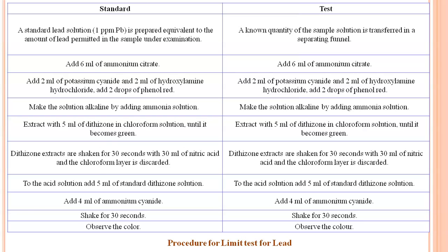For the preparation of the standard solution, a standard lead solution is prepared equivalent to the amount of lead permitted in the sample under examination — for example, a solution having 1 ppm lead. The same procedure is followed: addition of 6 ml ammonium citrate, 2 ml potassium cyanide, 2 ml hydroxylamine hydrochloride, and 2 drops of phenol red. The solution is made alkaline by adding ammonia, then extracted with 5 ml dithizone in chloroform until green. The dithizone extracts are shaken for 30 seconds with 30 ml of nitric acid, and the chloroform layer is discarded. To the acid solution, add 5 ml standard dithizone solution and 4 ml of ammonium cyanide, then shake for 30 seconds.